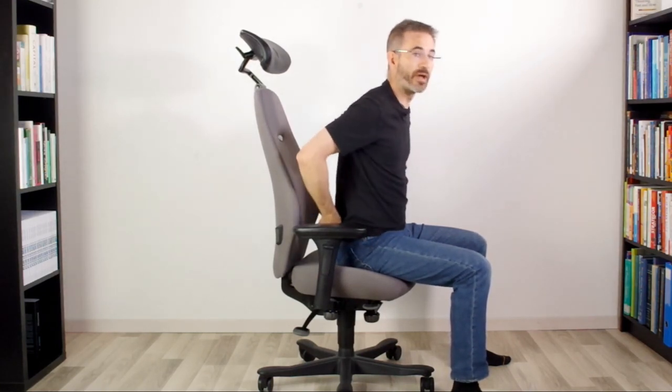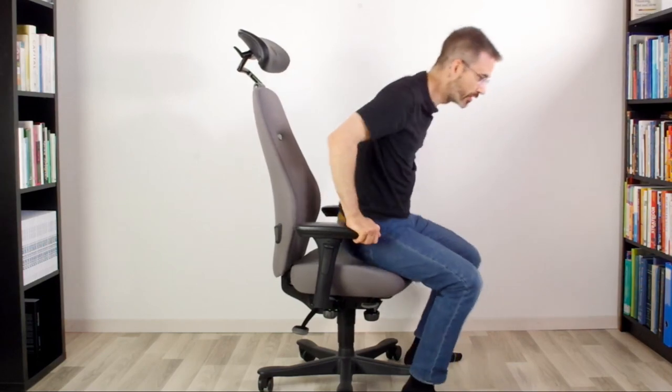What we want to prevent is this backwards rotation of your pelvis. This is why we only need to lock the pelvis. You see that when my pelvis is locked, my shoulder blades are not on the backrest. On this chair model, they're very far away because the backrest is shaped in such a way.